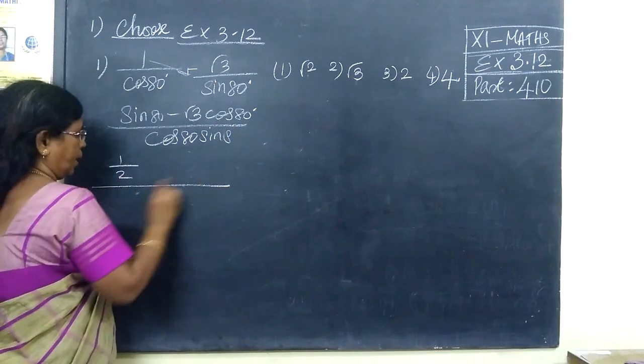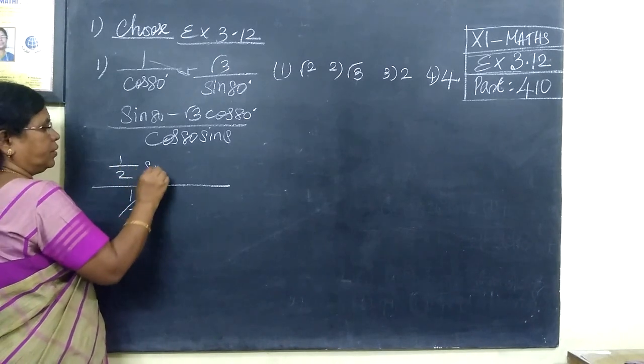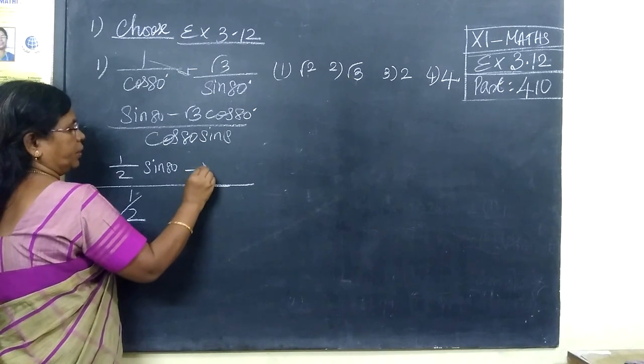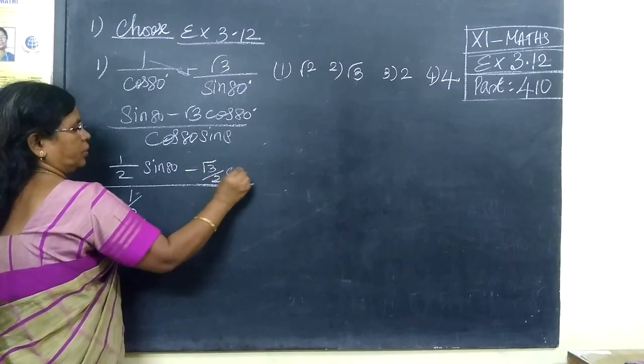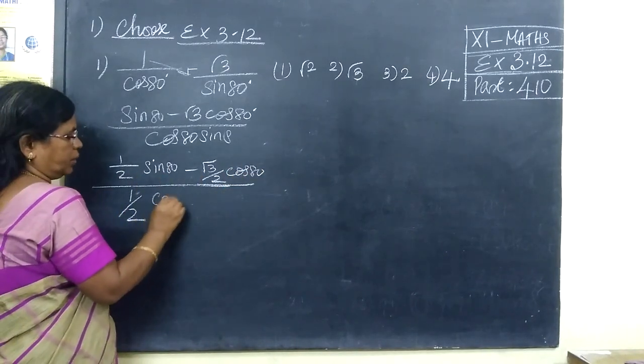Multiply and divide by half. So half in the numerator. So sin 80, half will be multiplied, so half into sin 80.